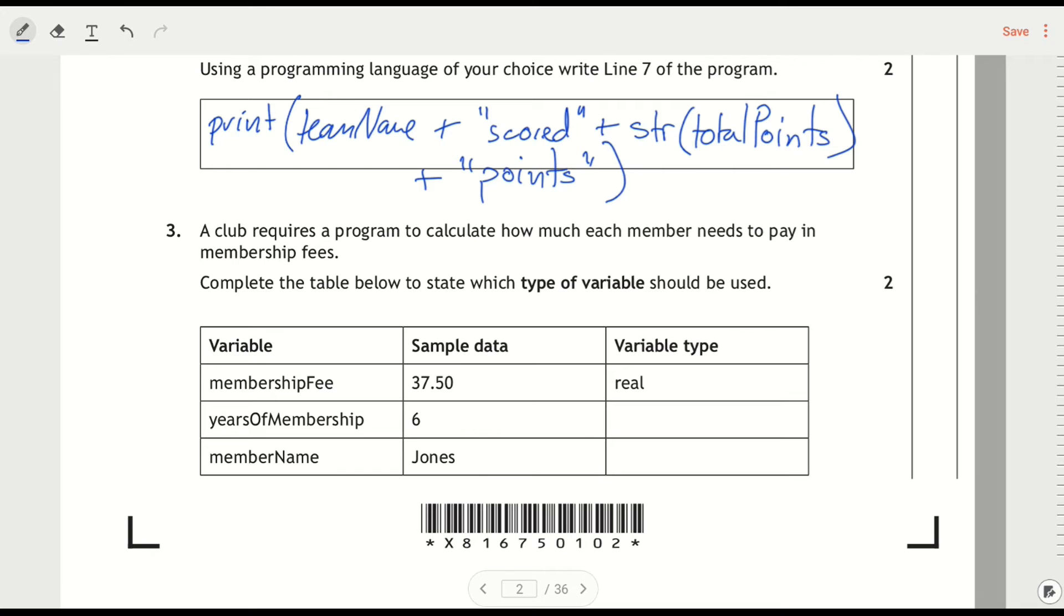Question three says, a club requires a program to calculate how much each member needs to pay in membership fees. Complete the table below to show which type of variable should be used. So this is a really easy question, especially because they've already done the real number for us, so you're not having to remember whether that's a real number or a Python float.